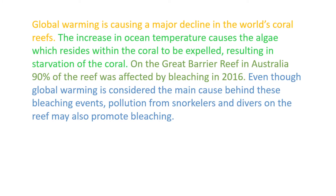Let's look at how this works in a practical example. Our topic sentence is very general: 'Global warming is causing a major decline in the world's coral reefs.' We support that with examples: 'The increase in ocean temperature causes the algae which resides within the coral to be expelled, resulting in starvation of the coral.' Here comes some evidence: 'On the Great Barrier Reef in Australia, 90% of the reef was affected by bleaching in 2016.' Then we conclude and transition: 'Even though global warming is considered the main cause behind these bleaching events, pollution from snorkelers and divers on the reef may also promote bleaching.' This is a fairly simple paragraph developed using the S-E-E-C structure.